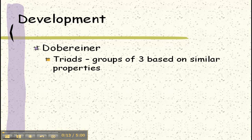Dobereiner was one of the first scientists who developed a way to organize elements and he based these groups on similar properties and he put them into groups of three called triads.